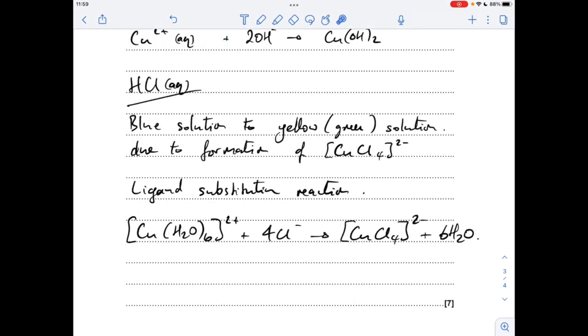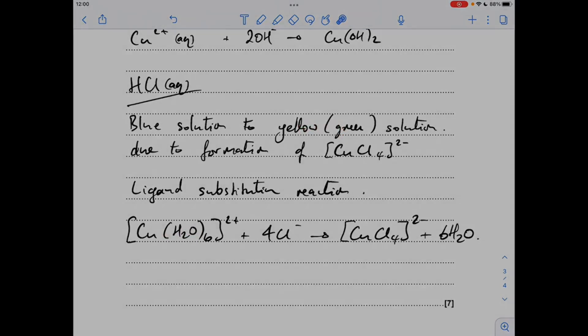Finally, the reaction with concentrated hydrochloric acid. That blue solution goes to a yellow solution. You could get away with saying green. Blue solution to yellow or green solution, and that's due to the formation of this complex of copper. That's a ligand substitution reaction, so the water ligands are substituted by these four chloride ligands. If this was in its pure form it's yellow. Often you've got the yellow and some of this left over which is blue, and that's where that green solution comes from. The exam board will allow either of those colors.